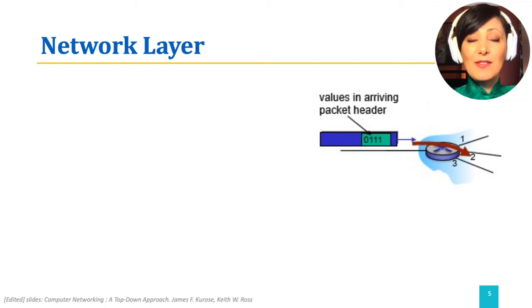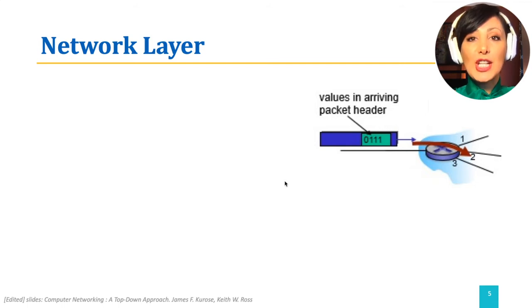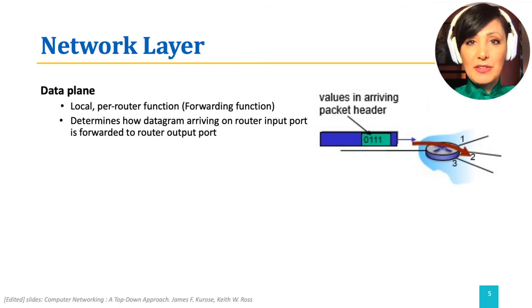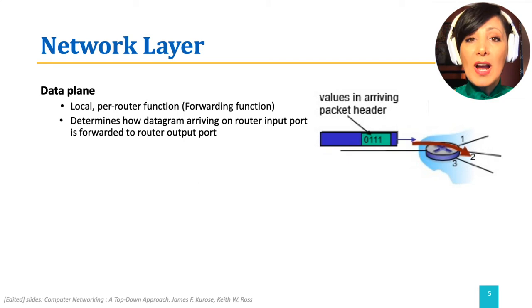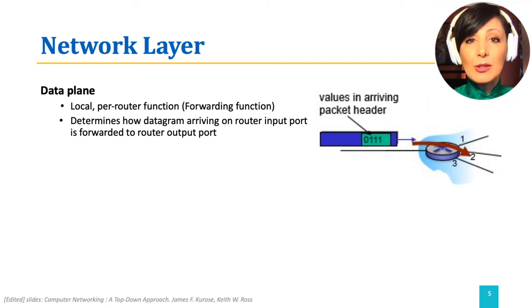The two interacting parts of the network layer are data plane and control plane. The forwarding function is performed at what we refer to as data plane. Data plane implements local per-router functionality of forwarding, which determines how a datagram arriving on router input ports is forwarded to the appropriate router output port.